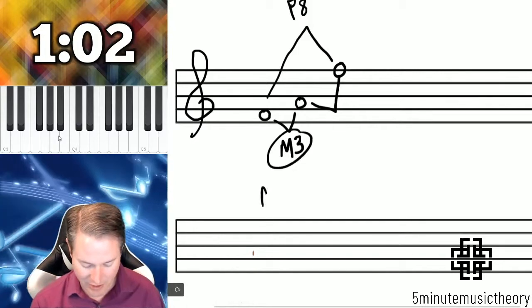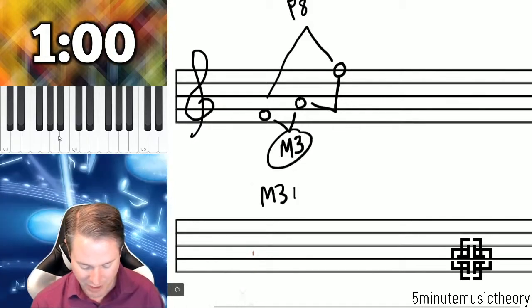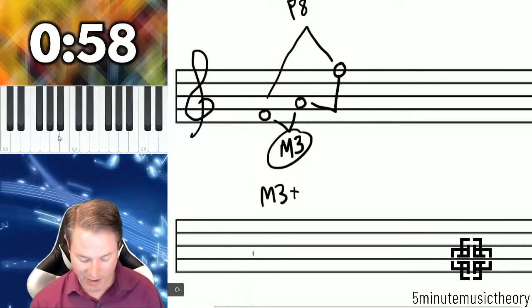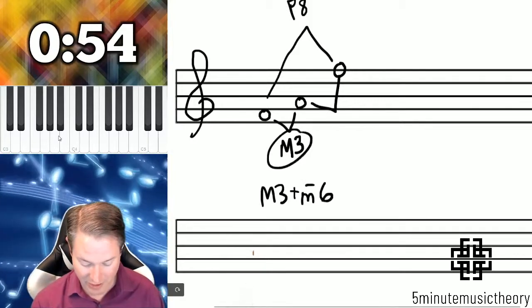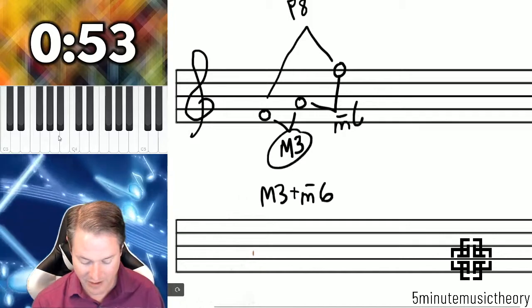So the complement of a major third, if we do just what we did, major third plus what? Nine minus three is six. The opposite of major is minor. Therefore, this is a minor sixth.